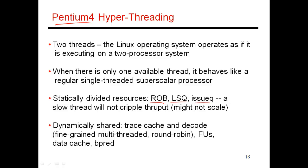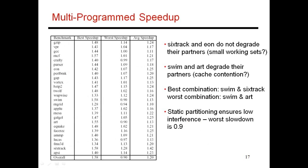There are some other resources which are dynamically shared, such as the trace cache — which is a cache to fetch sequences of instructions — as well as the decode units, functional units, data cache, branch predictor, and so on.